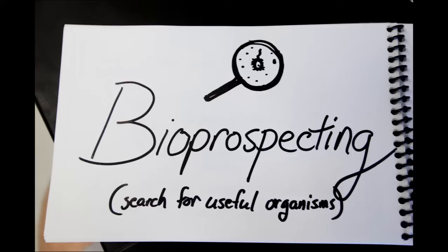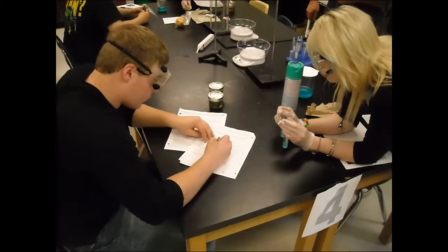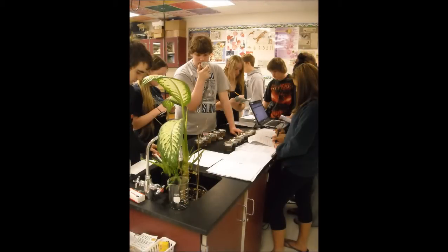Just kind of a rehash of what is bioprospecting, where would we find microbes that produce the enzymes. So they had to pick four locations, and then when they actually went out to collect, they had to narrow it down to two. In their groups, they were discussing which of the two of their four they thought would be most effective and why, knowing that they would have to defend those in front of everyone in a few minutes.